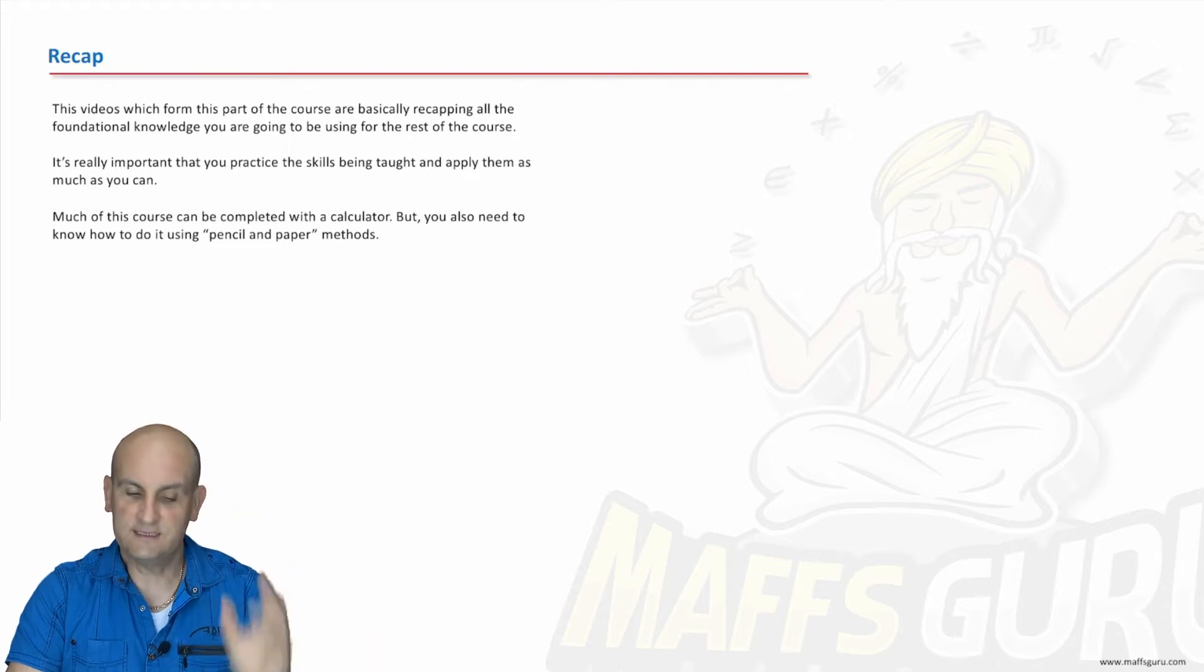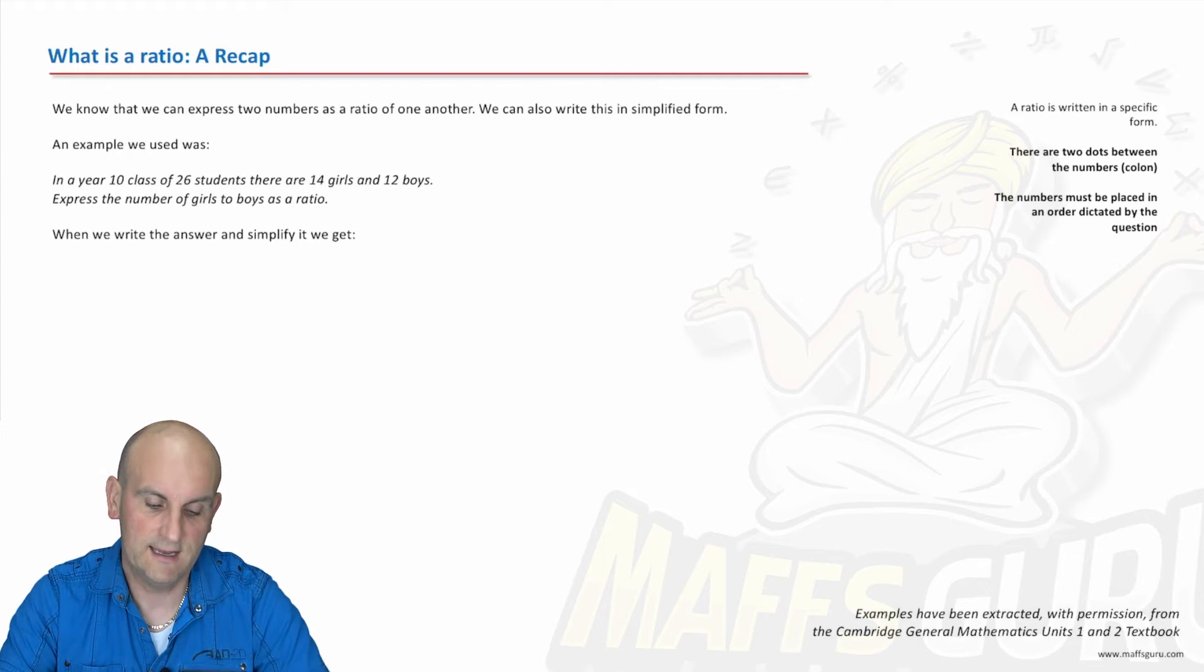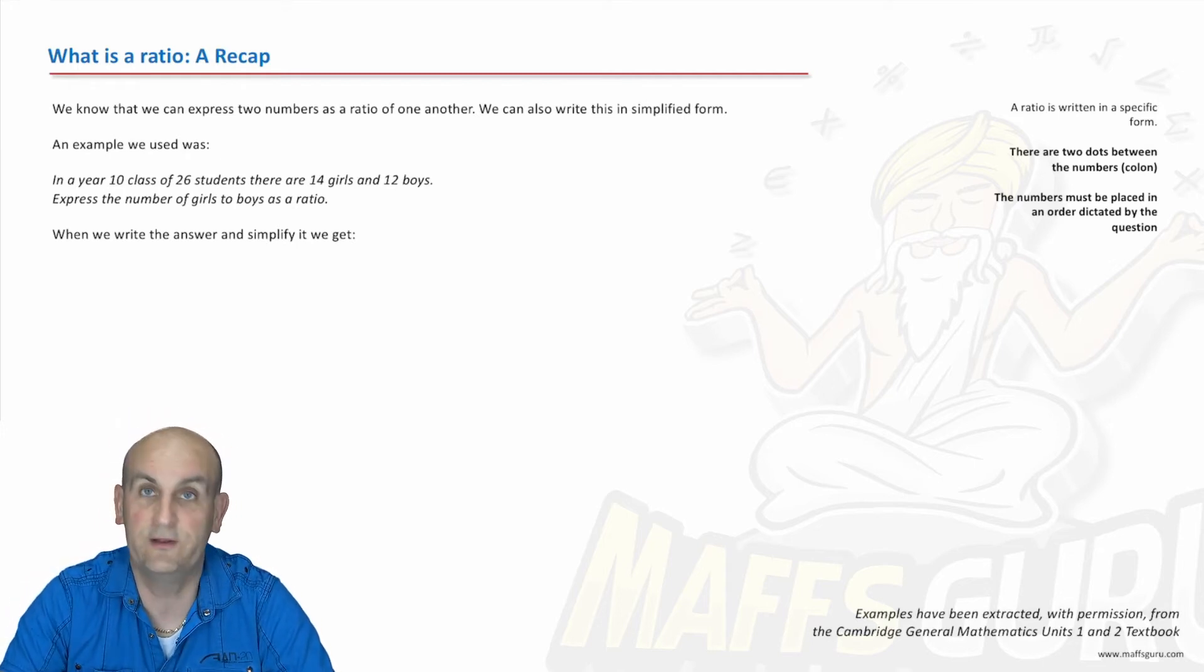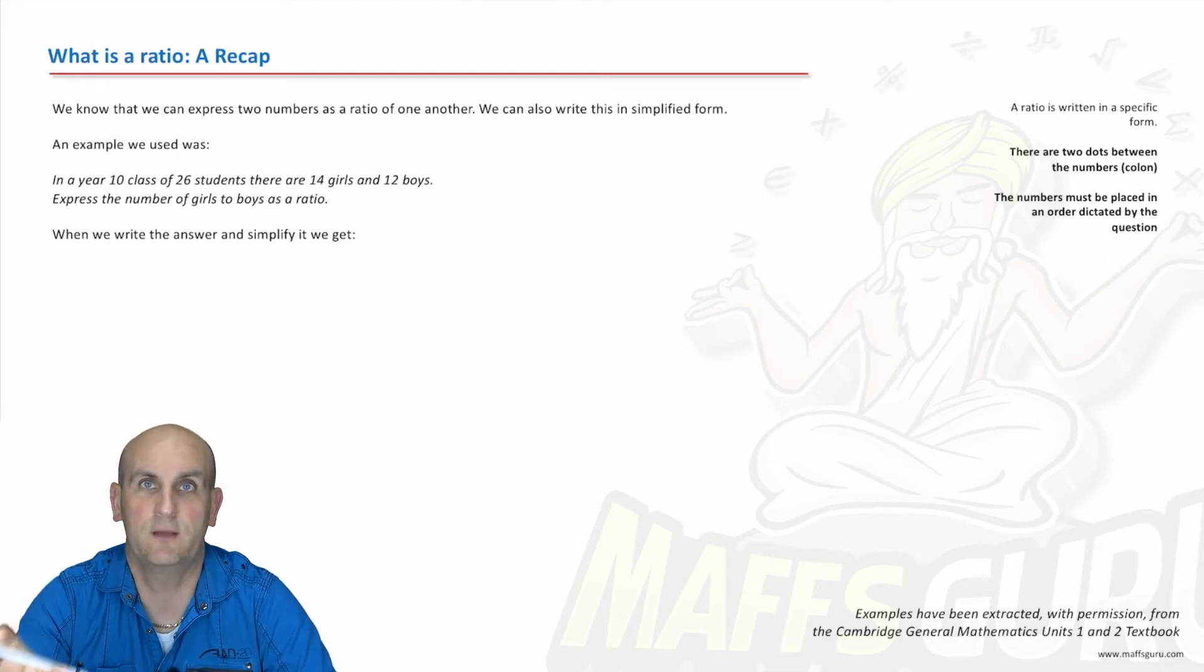So as I say here, to recap, these are all foundational videos and what they will need to do is build on, and what I'm going to do here is build on a ratio. We've been looking at ratios and the idea of expressing numbers just to compare quantities. That's really what a ratio is, a way to compare. And as I say here, in a year 10 class of 26 students, now the number of students is actually really important. Later on it's going to come up critically important in later videos. There are 14 girls and 12 boys.